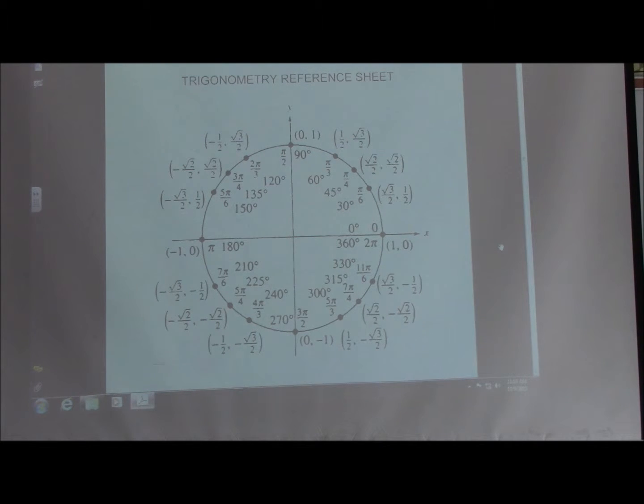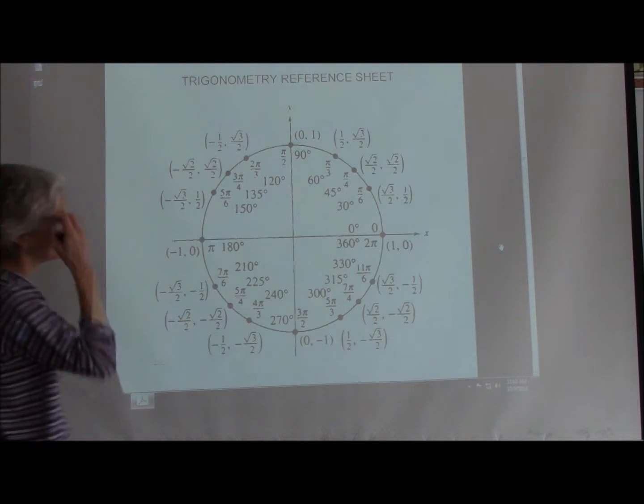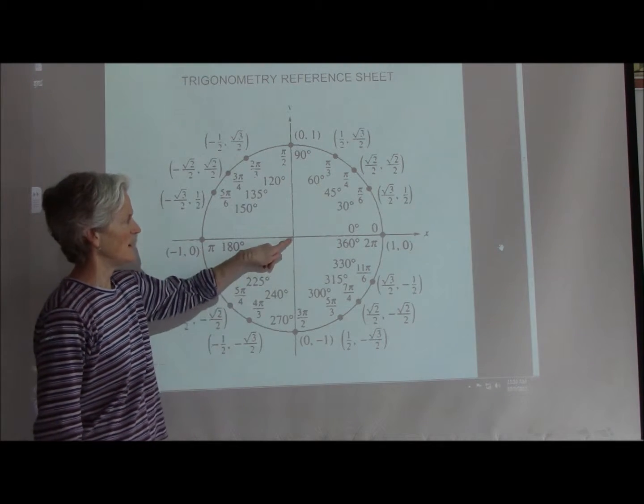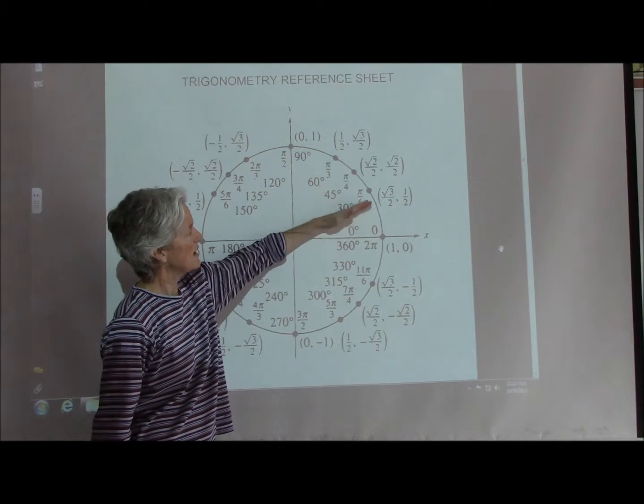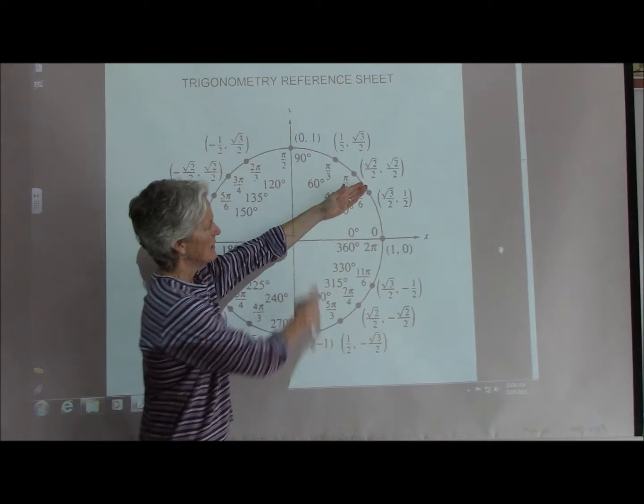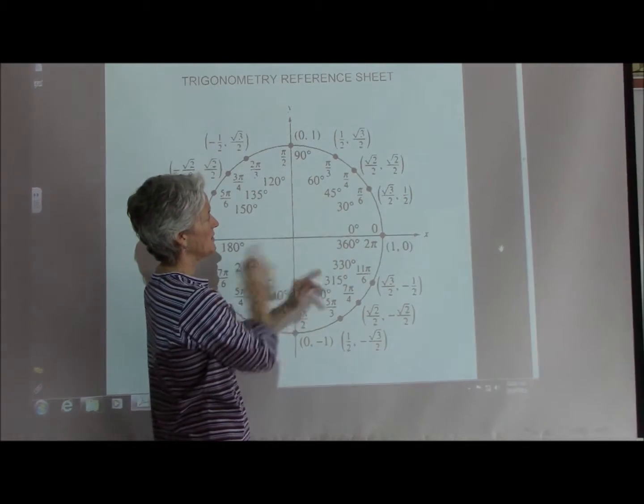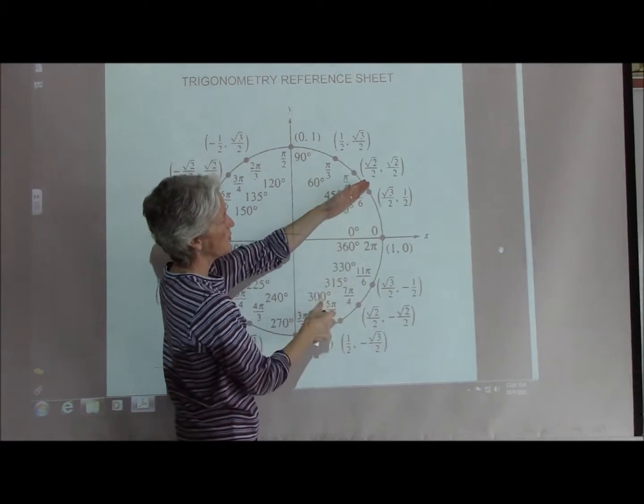Here's the unit circle, and I think that we can find our special triangles here. So if I had rotated 30 degrees, and again, this is our unit circle, so our rotating arm would be 1.